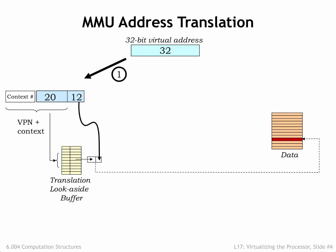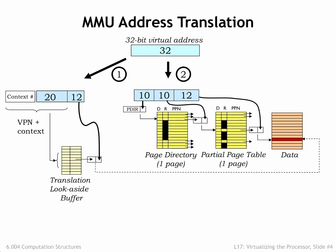Here's a diagram showing the translation process. First, we check to see if the required VPN-to-PPN mapping is cached in the TLB. If not, we have to access the hierarchical page map to see if the page is resident and, if so, look up its physical page number. If we discover that the page is not resident, a page fault exception is signaled to the CPU so that it can run a handler to load the page from secondary storage.